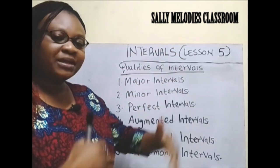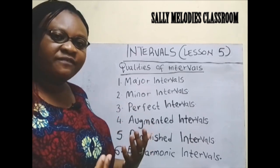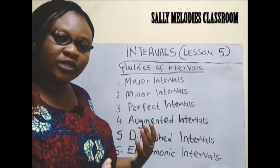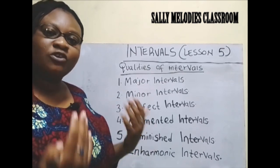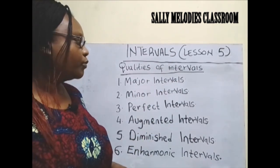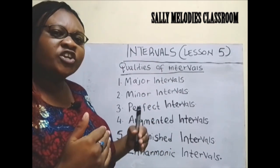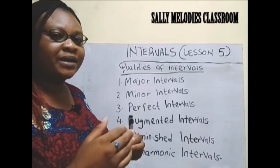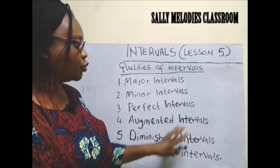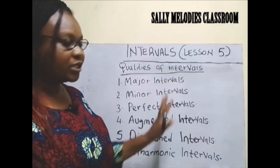The count might be the same — it is a third, it is a fourth, it is a fifth, it is an octave, it is a second. But what kind of a third? What kind of a second? What kind of a fourth? What kind of an octave? So we are going to look at it and it is very simple. You will realize that some of the intervals, even if it is a third, maybe it has been reduced — the distance has been reduced maybe by a semitone, or it has been increased by a semitone. So today I just want us to learn these six qualities of intervals.